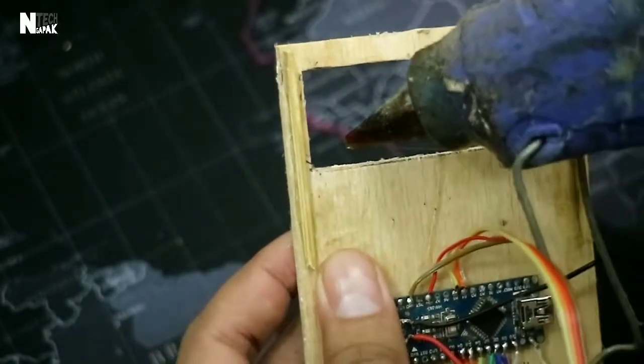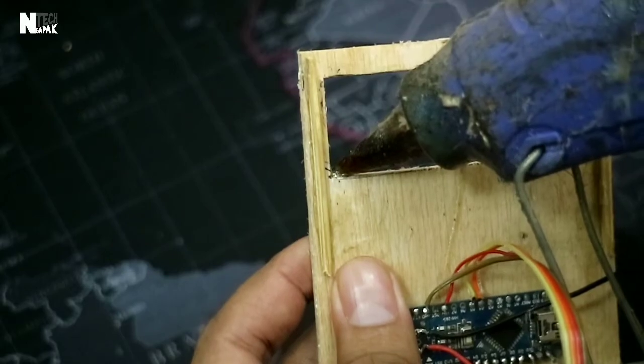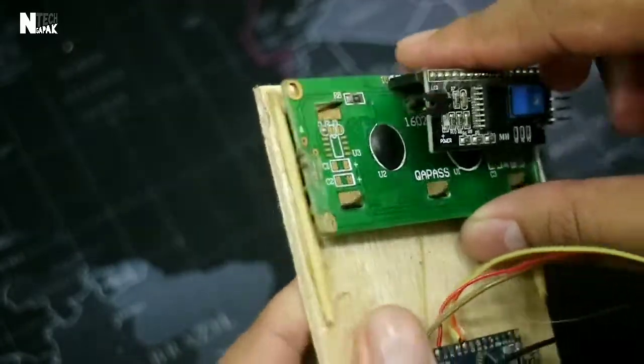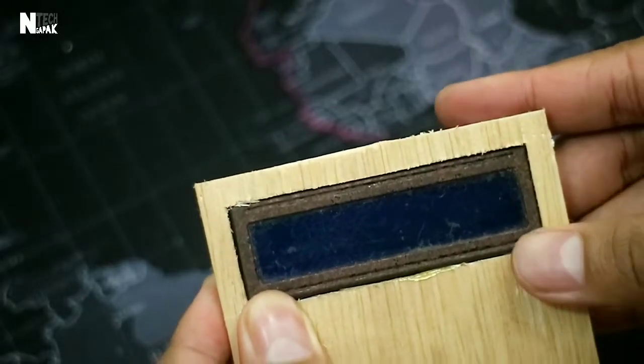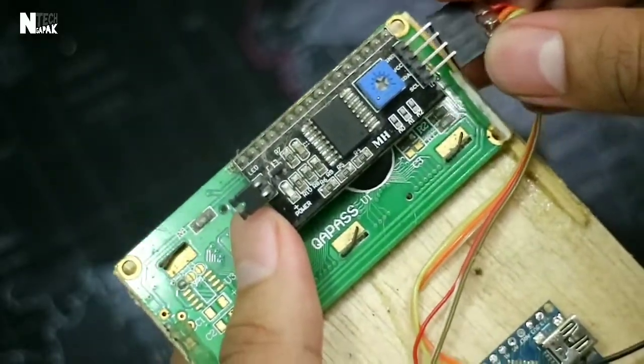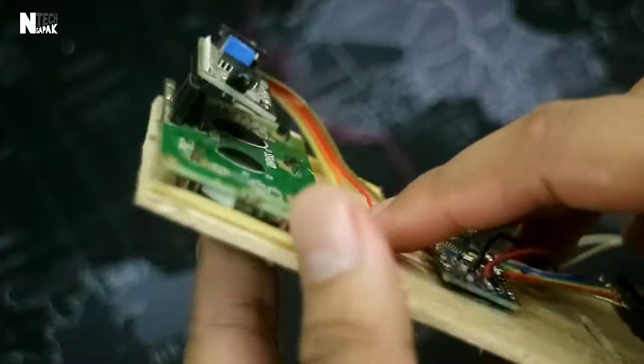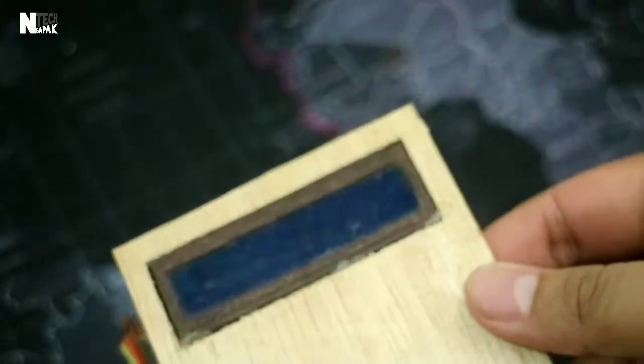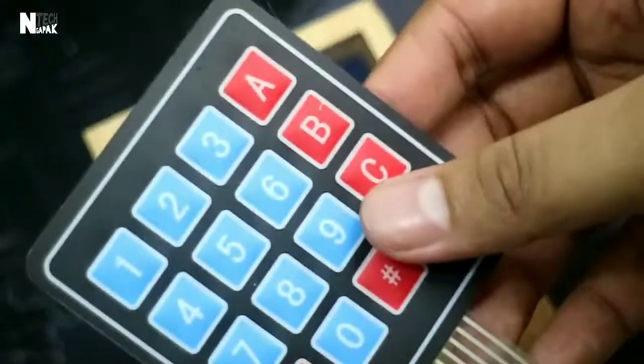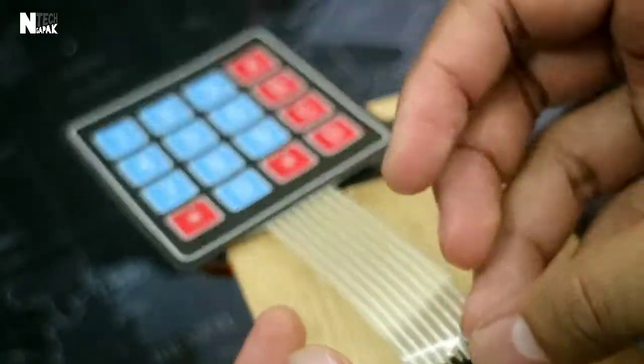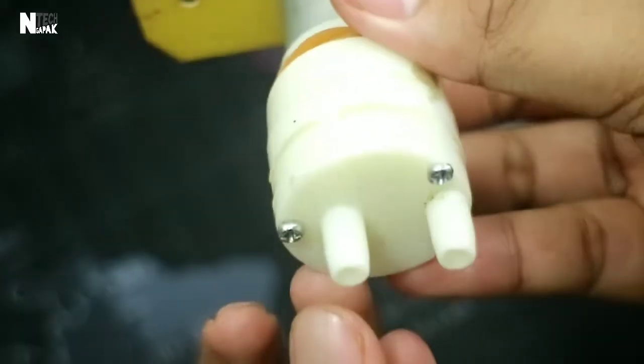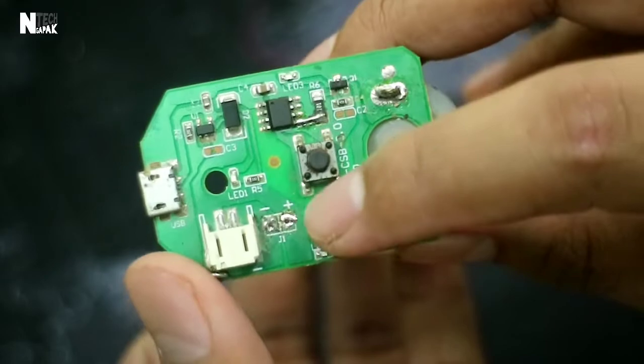Okay, let's install the LCD. Like this. And then attach the cables. And for the keypad, we'll place it here, in front.